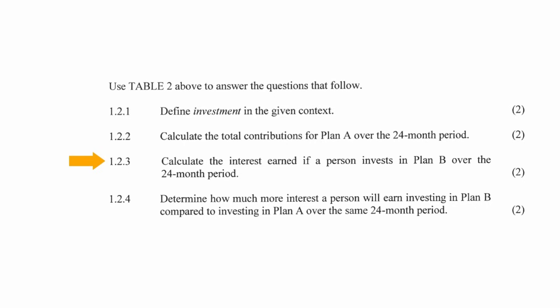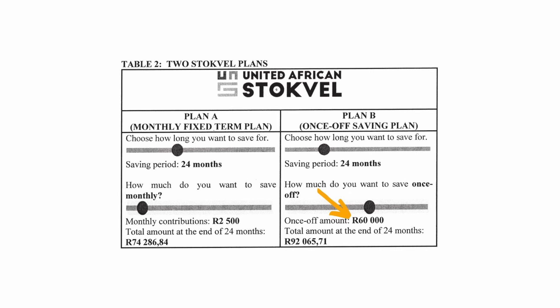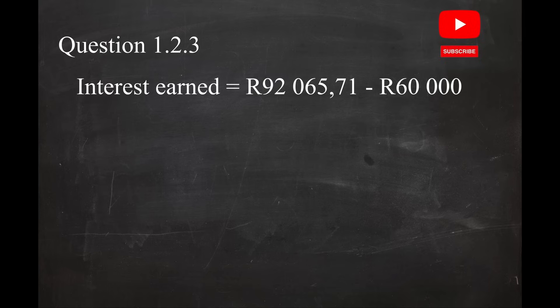In question 1.2.3, you have to calculate the interest earned if the person invests in Plan B over a period of 24 months. From the table for Plan B, the total contribution is $60,000 and the total amount earned over 24 months is $92,065.71. So the interest earned over the two-year period is $92,065.71 minus $60,000, which equals an interest earned of $32,065.71.